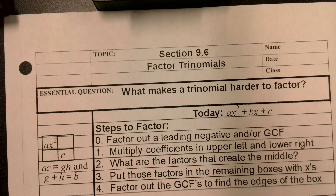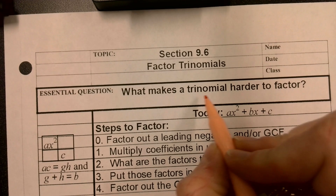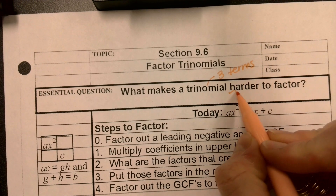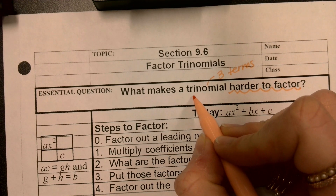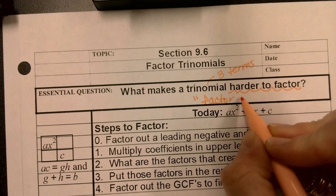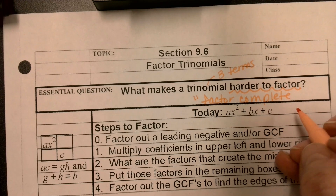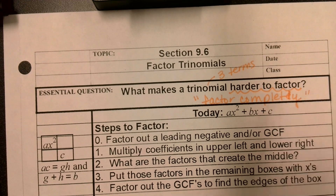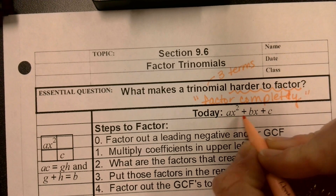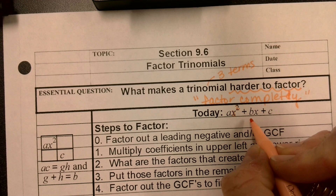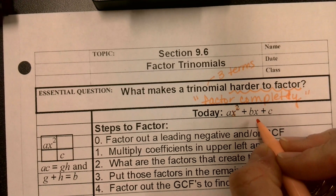Today we're going to take a look at factoring trinomials, and our essential question is: what makes a trinomial harder to factor? Remember, a trinomial has three terms. When you have something that's harder to factor, you'll often see the directions 'factor completely.' When you see that, there's a good clue that you have a GCF. So if we have a quadratic in standard form — ax² + bx + c — there's probably a GCF.